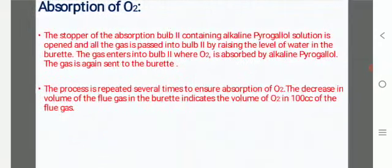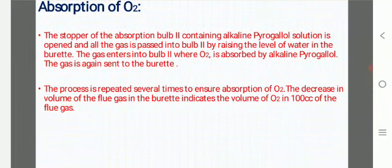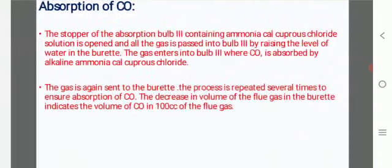Absorption of O2: The stopper of the absorption bulb II containing alkaline pyrogallol solution is opened and all the gas is passed into bulb II by raising the level of water in the burette. The gas enters bulb II where O2 is absorbed by alkaline pyrogallol. The gas is again sent to the burette. The process is repeated several times to ensure absorption of O2. The decrease in volume of flue gas in the burette indicates the volume of oxygen in 100cc of the flue gas.